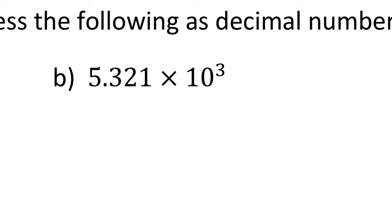For the next example, we have 5.321 times 10 to the power of 3, and we're going to have to move the 5 three places. So it moves once, twice, 3 times. Your 5 was in the units column and moved 1, 2, 3 times, so your answer is just 5,321.